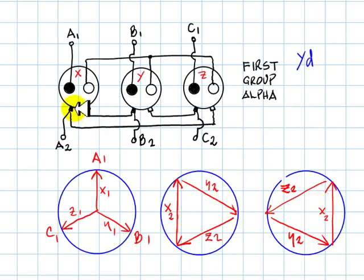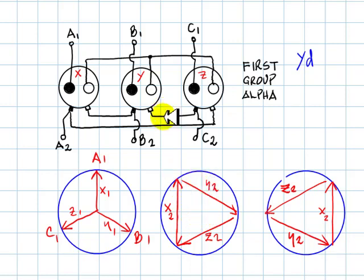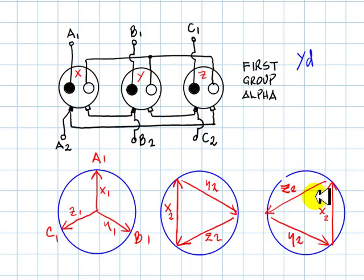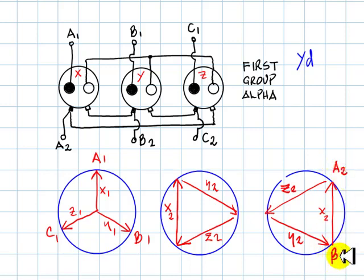Let's see which delta connection we have. The tip of X2 is connected to the tail of Z2 — this is the correct connection. So this is the primary and this is the secondary. Phase A of the secondary is at the tip of X2, and this has to be phase B and phase C of the secondary, and they comply.